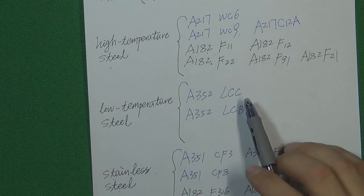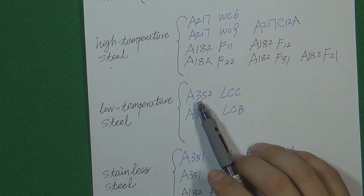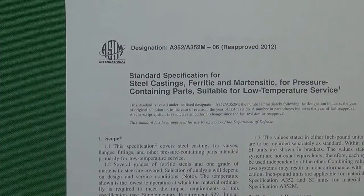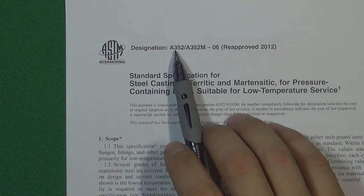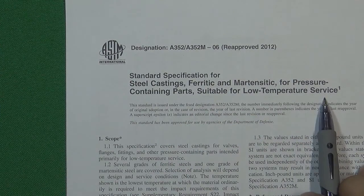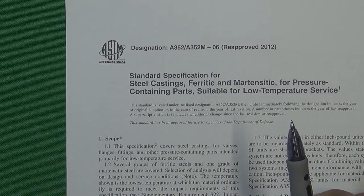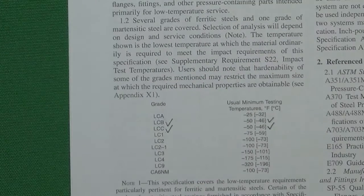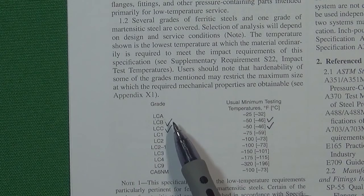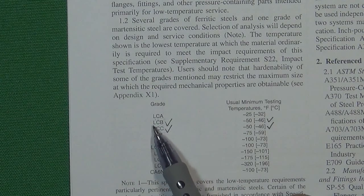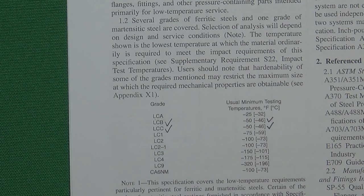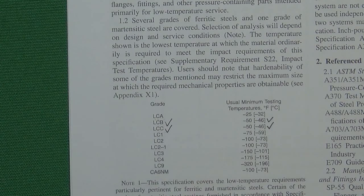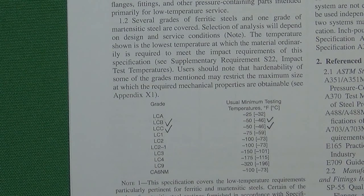Let's look at the standard for low temperature steel, ASTM A352. This is the standard for low temperature service steel. According to the standard, it contains several different grades — LCA, LCB, and LCC. The most common two materials for the valve industry are LCB and LCC. B is better than A, C is better than B — the same principle as carbon steel. L means low temperature, C means carbon.